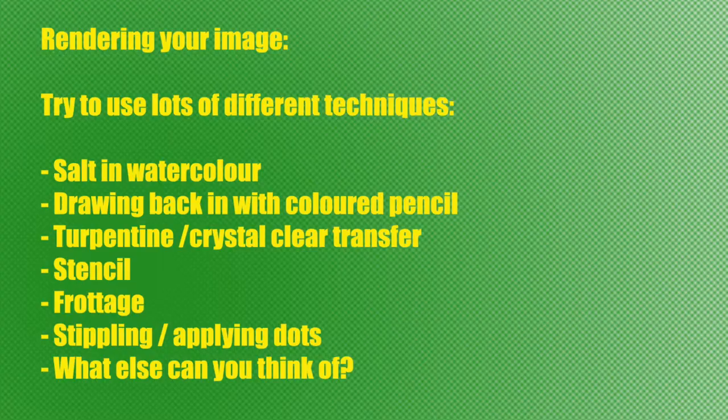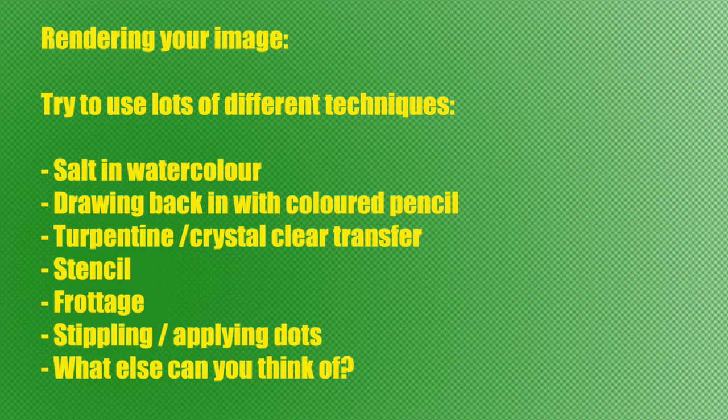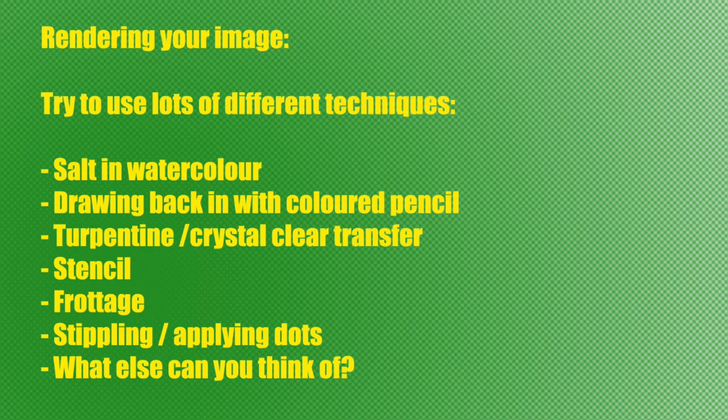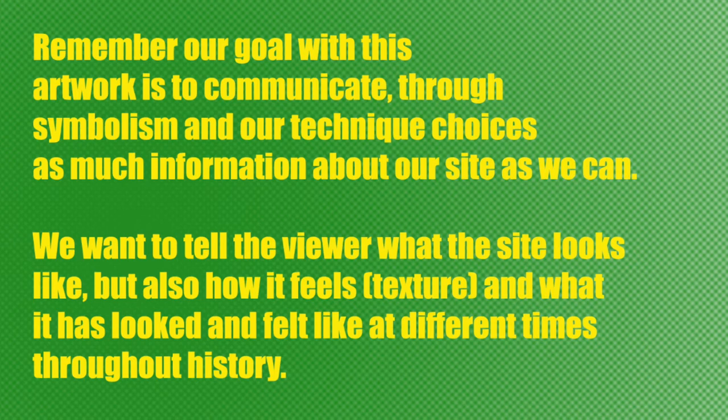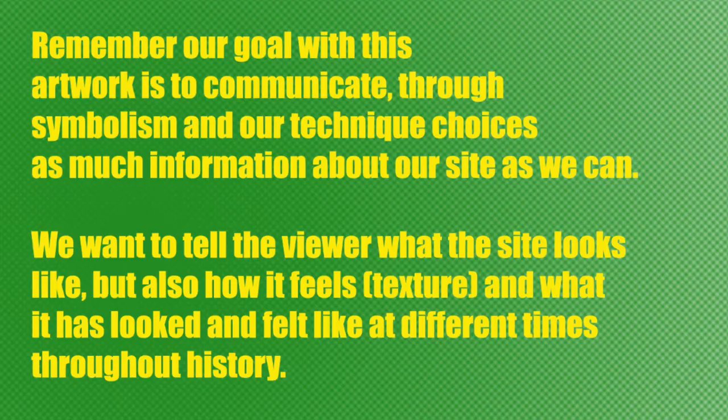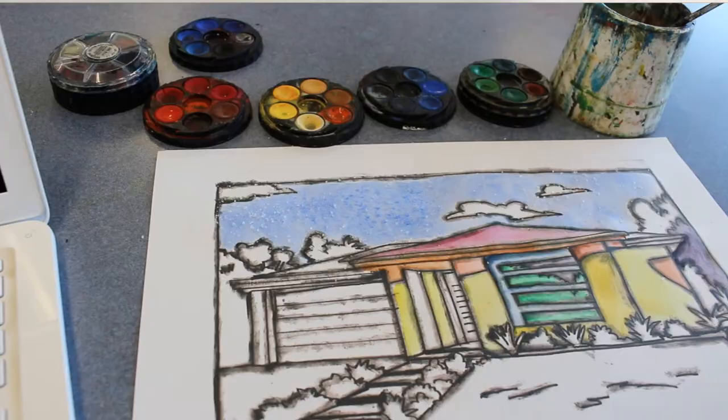To render or detail my image, I can use a combination of lots of different techniques: putting salt back on it, drawing back into it with coloured pencils, transfer techniques, stencils, frottage, stippling — see what else you can come up with. Our goal is to communicate through the rendering process lots of information about our site. We want the viewer to know not only what it looks like, but also the textures and how it's changed over time.